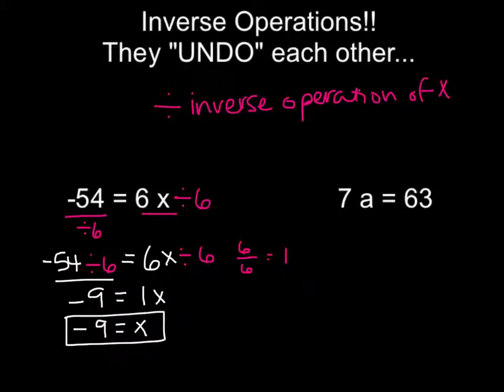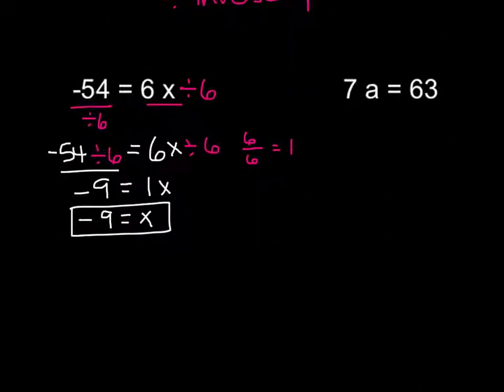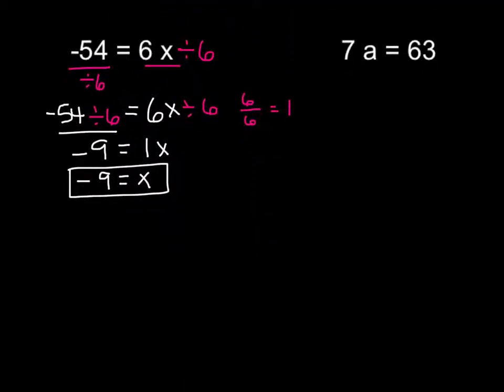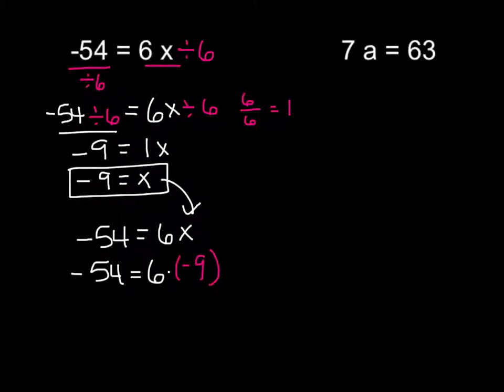Now let's check our work. So, our original equation was negative 54 is equal to 6x. If negative 9 was in there for x instead, we could say negative 54 is equal to 6 times negative 9. 6 times negative 9 equals negative 54. Oh my goodness, I think we did it. Negative 54 is equal to negative 54. Awesome. That works.